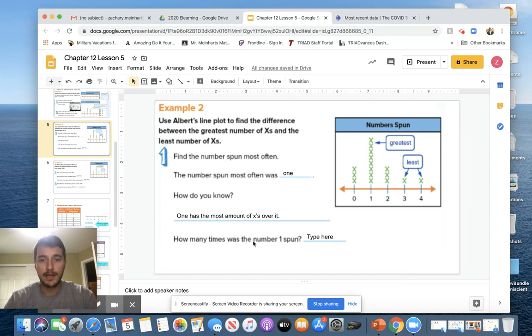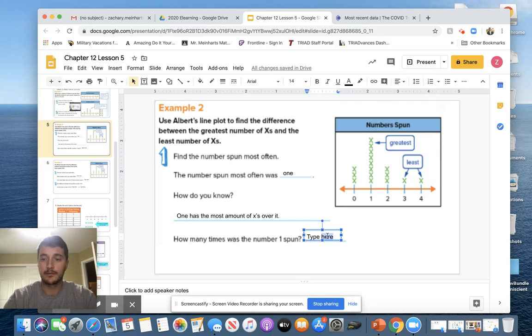Now it says how many times was the number one spun? So let's count. One, two, three, four, five, six, seven, eight. Eight. Boom. We are done with that.